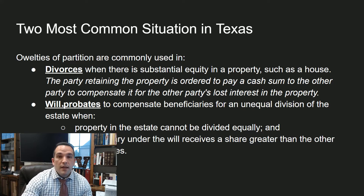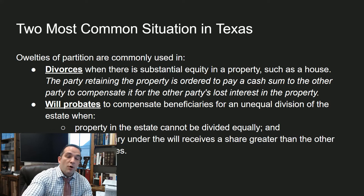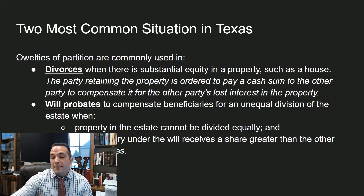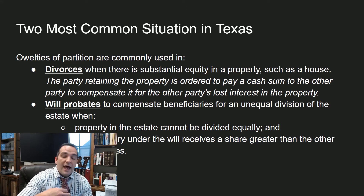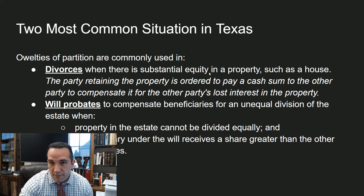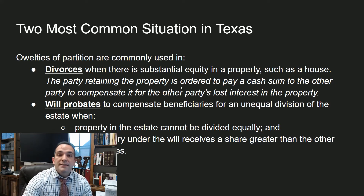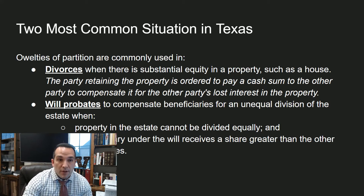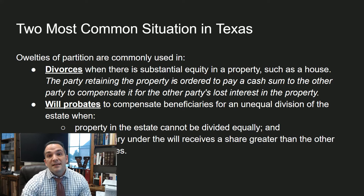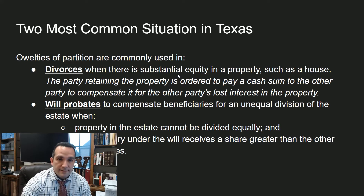If we have a will probate and one person is supposed to get most interest in the house, but we need to compensate another — or divorce, which is 90% of where you're going to see this — one person is either awarded the property for a period of time to get sold or to get a refinance, some kind of situation along those lines.